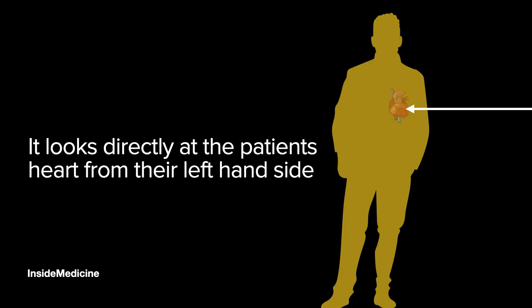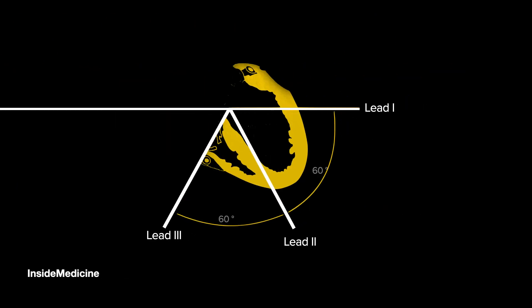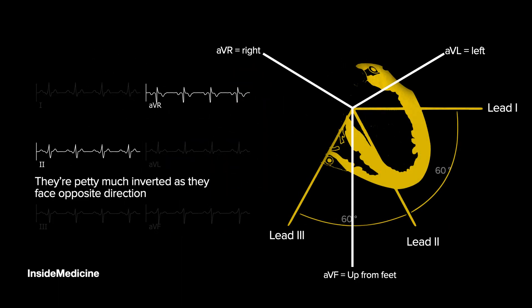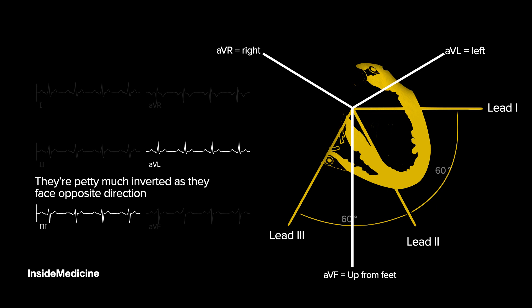To understand the position, we start with lead 1 as our reference point. Lead 1 looks directly at the patient's heart from their left-hand side. Lead 2 is 60 degrees clockwise from lead 1, and a further 60 degrees takes you to lead 3. When we add the augmented vector leads, AVR is from the right, AVL is from the left — both 30 degrees from the horizon — and AVF is looking up from the patient's feet. Lead 2 and AVR are looking at the heart from almost opposite directions, so in the ECG we see an almost inverted picture, which makes sense. The same applies to lead 3 and AVL. So if lead 2 and AVR aren't inverted, there's probably an issue.